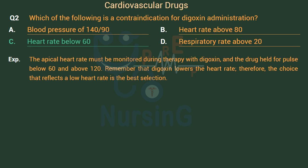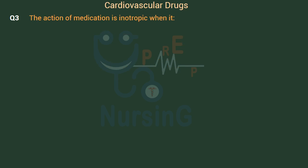The apical heart rate must be monitored during therapy with digoxin, and the drug should be held for a pulse below 60 or above 120. Remember that digoxin lowers the heart rate; therefore, a low heart rate is the best selection as a contraindication.